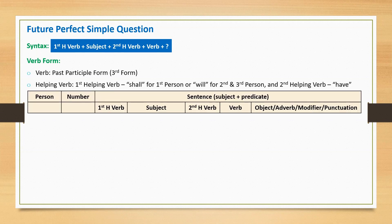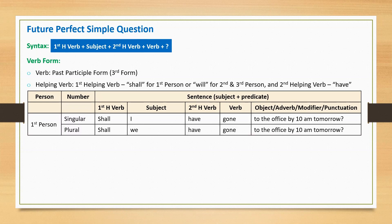Let's look at examples. First person singular: 'Shall I have gone to the office by 10 a.m. tomorrow?' The sentence starts with the first helping verb 'shall', followed by subject 'I', second helping verb 'have', main verb 'gone' in past participle form, and a question mark. Similarly, first person plural: 'Shall we have gone to the office by 10 a.m. tomorrow?'